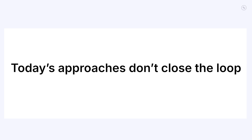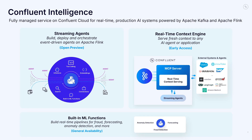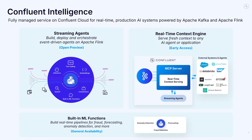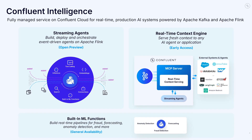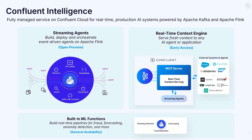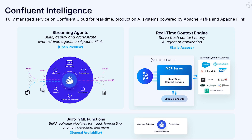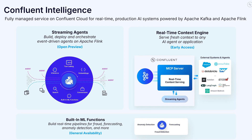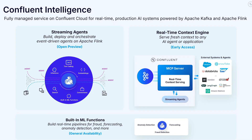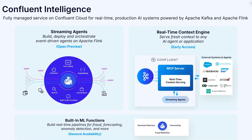We're closing that gap with Confluent Intelligence, our fully managed service to bring real-time data to production AI systems with Kafka and Flink. It unifies data and AI into one continuous system, so every agent and application can learn from the past, adapt in the moment, and act instantly. It's built around three core products: built-in ML functions, streaming agents, and real-time context engine.